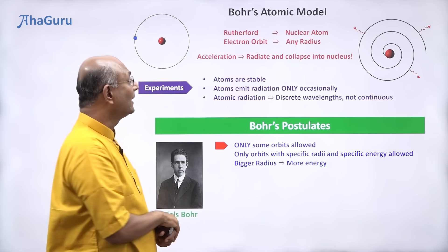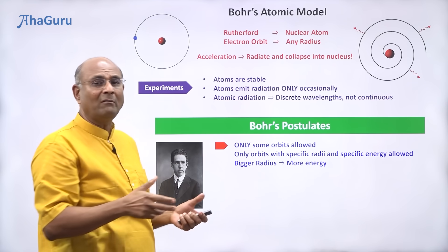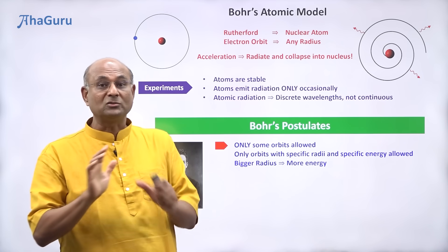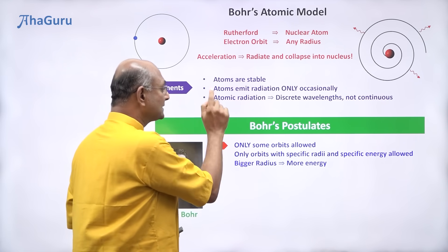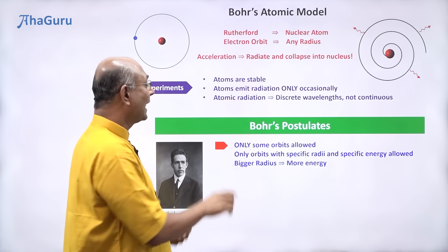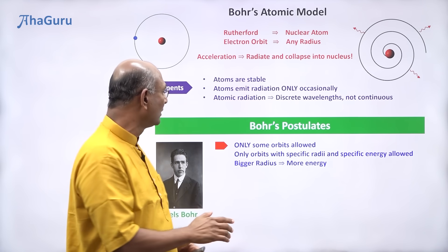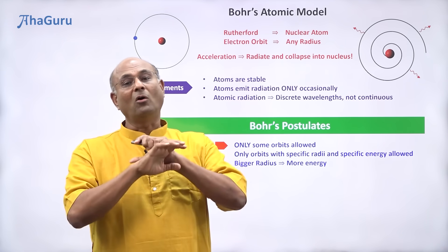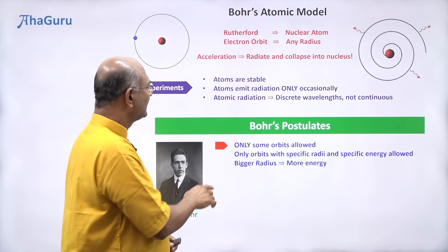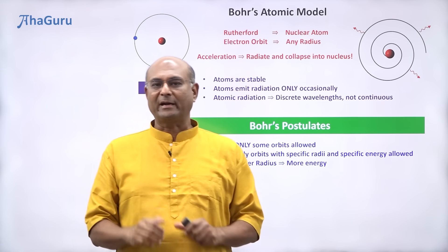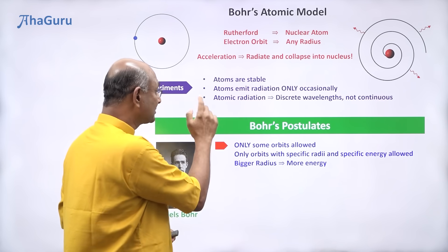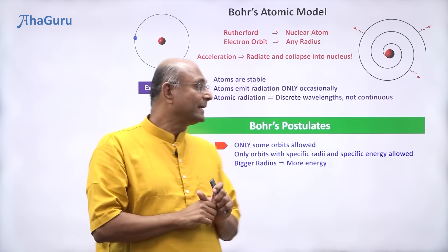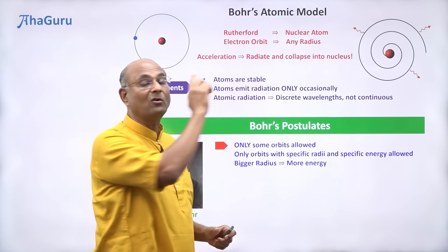Think about Rutherford's model — in that model, the electron could revolve at any radius, so all orbits are allowed. But Bohr is saying no, that is not possible. There are certain orbits, certain radii that are allowed; other orbits are not allowed. Only orbits with specific radii and specific energies are allowed. The bigger the radius, the more will be the energy of the electron in that orbit. The key difference between Rutherford's model and Bohr's postulate is that only certain orbits are allowed.